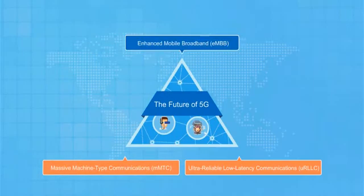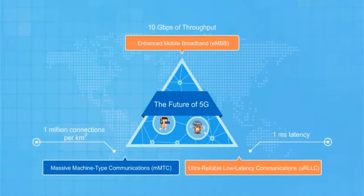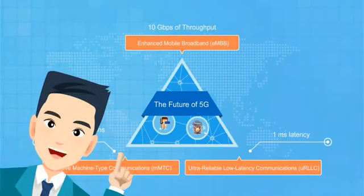The ITU's vision for these three scenarios includes a 10 gigabit per second peak rate, end-to-end latency that doesn't exceed one millisecond, and connectivity that includes a million connections in every square kilometer. To achieve these three goals, 5G networks will need some new technologies.